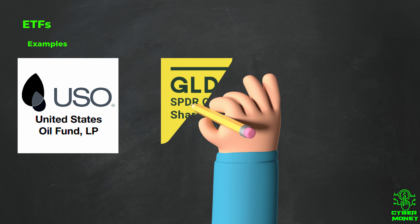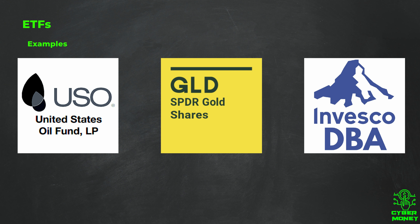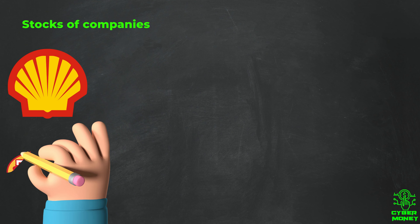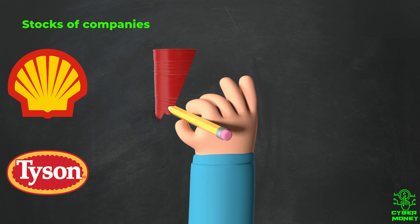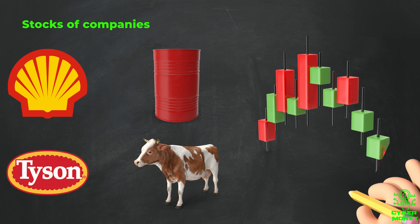Some examples of commodity ETFs include the United States Oil Fund, SPDR Gold Shares, and the Invesco DB Agriculture Fund. Another way to invest in commodities is through the stocks of companies that deal in commodities — companies involved in the production, exploration, refining, or distribution of commodities, so their stock prices can be influenced by the price movements of the commodities they deal with.